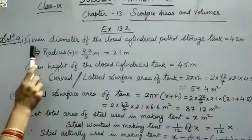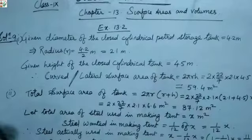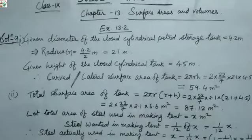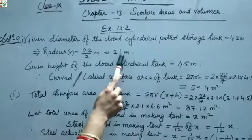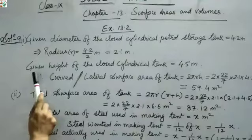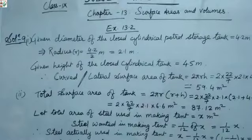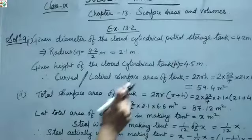Given: diameter of the closed cylindrical petrol storage tank = 4.2 m. So radius = 4.2 ÷ 2 = 2.1 m. Given height of the closed cylindrical tank H = 4.5 m.